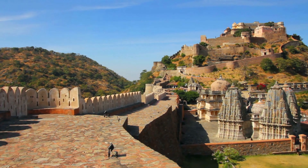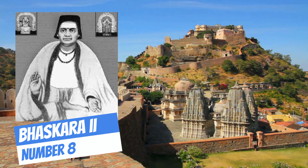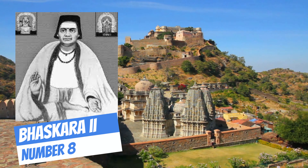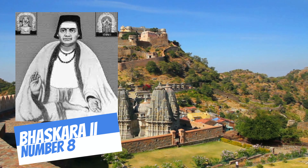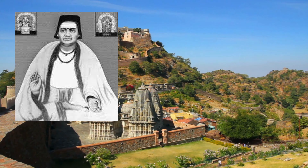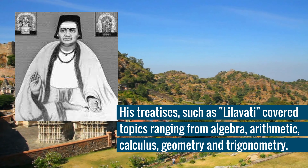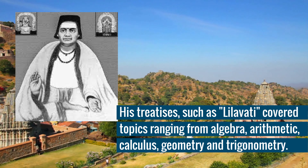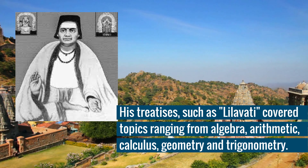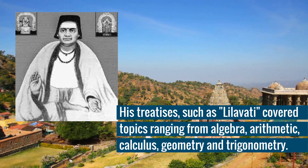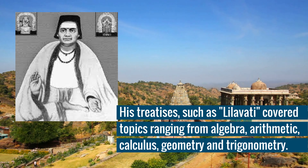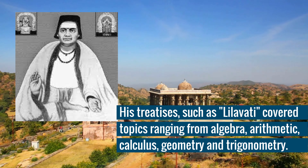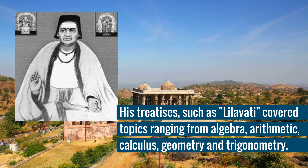Number 8: Bhaskara II. Bhaskara II was a pre-eminent mathematician and astronomer of medieval India. His treatises such as Leelavati covered topics ranging from algebra, arithmetic, calculus, geometry, and trigonometry, showcasing the advanced mathematical knowledge prevalent in ancient India.